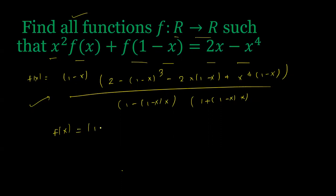So here, f(x) = (1-x)[...]. Here I put 1 - 3x + 3x² - x³ - 2x + 2x² + x⁴ - x⁵.